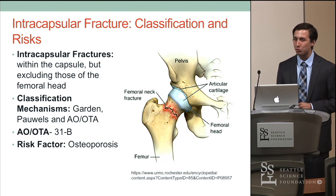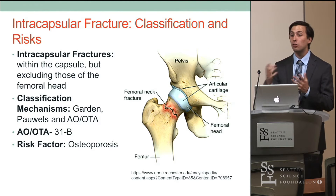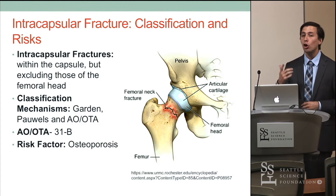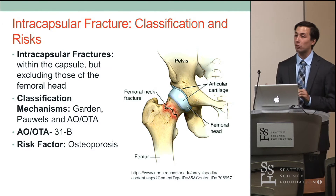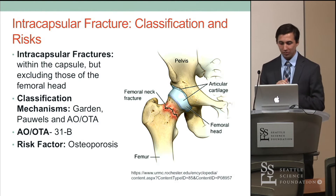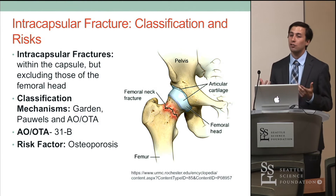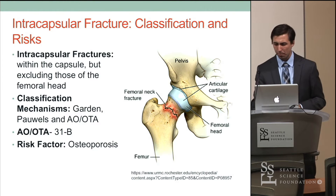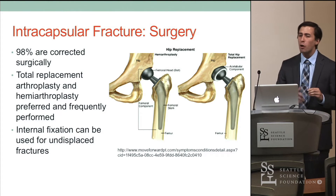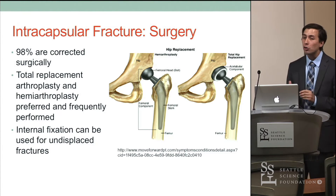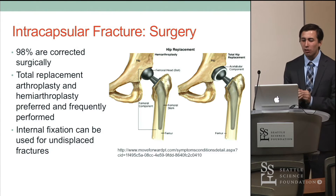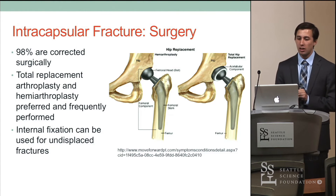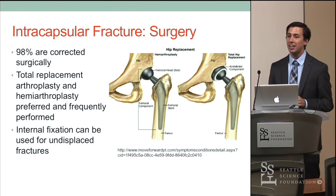Using the AOOTA classification: intercapsular fractures are coded 31B — 3 represents the femur, 1 means proximal, and B means intercapsular (A would be extracapsular). The main risk factor is osteoporosis, with a clear association between osteoporosis and intercapsular fractures, which make up about 50% of all hip fractures. Most are corrected surgically — a small percentage of undisplaced, minor fractures are not. The primary surgical options are total arthroplasty, which includes an acetabular and femoral head component, or hemiarthroplasty, which replaces only the proximal femur. Internal fixation using screws is reserved mostly for undisplaced fractures.